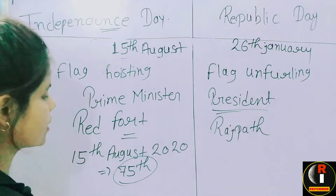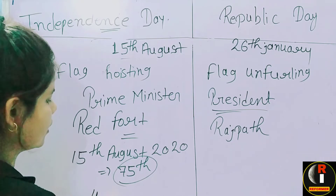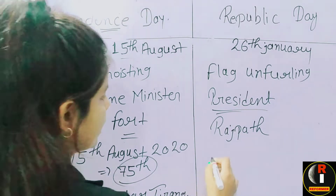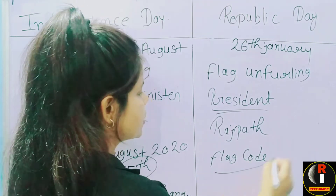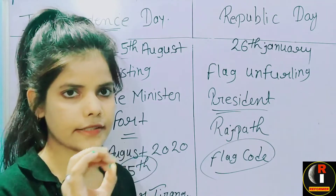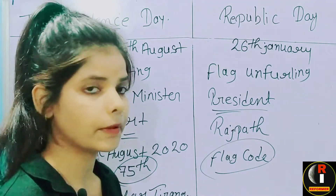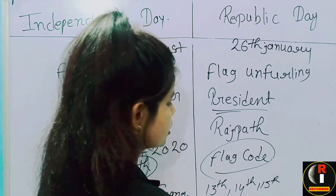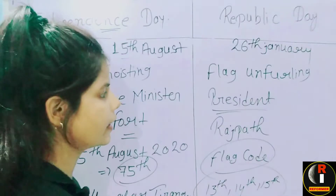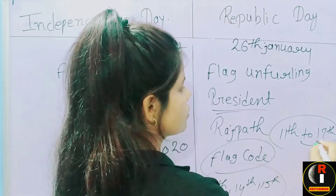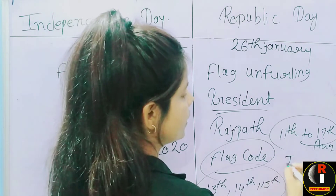There is a mission called Har Ghar Tiranga — every house should hoist a flag. There is a flag code, and there are many changes this time. Earlier, the Tiranga could only be flown before sunset — you had to take it down. But now it is allowed to fly the flag at night as well. The dates 13th, 14th, and 15th August, we will hoist the flag. Also, 11th to 17th August will be celebrated as Independence Week.